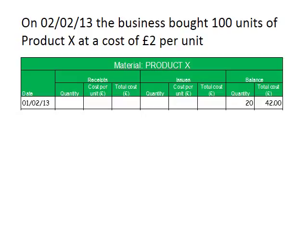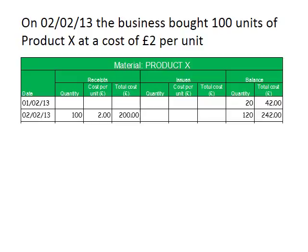We then make a purchase of 100 units on the 2nd of February, each of those units costing £2 per unit. So we're going to record this transaction in the receipts columns and also update the balance figures. We record the date — 2nd of February — we record the 100 units purchased, the cost of £2 per unit, and the total cost of £200, which is simply 100 units multiplied by £2 per unit.